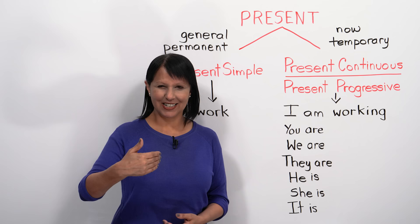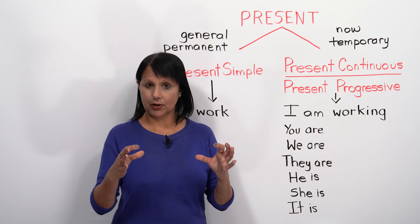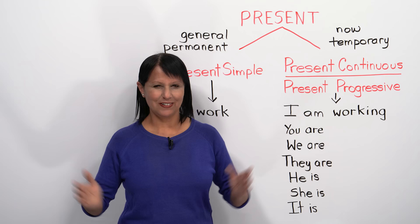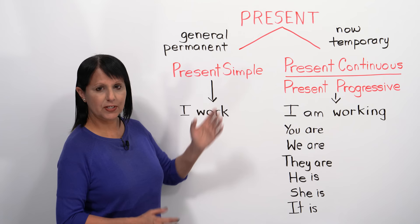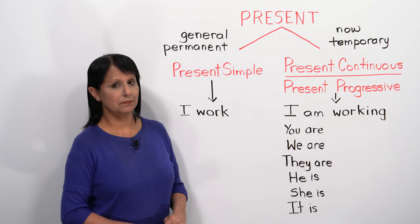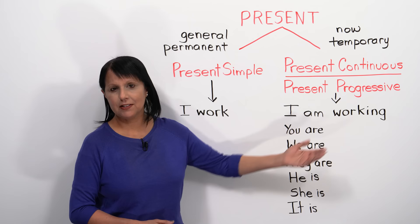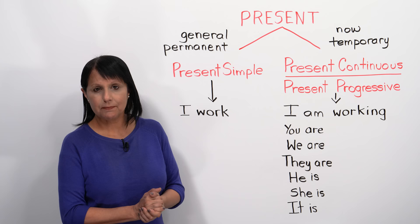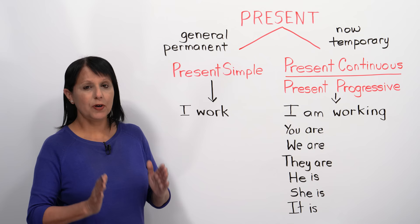It can also talk about something temporary — like you're watching this lesson right now, for a short time. So it could be something happening now or something temporary. However, we use 'I work' in the present simple to talk about things that are true in general — for example, 'I work in this company, but I am working now,' or 'I work in this company, but I'm not working now — I'm having lunch.' We also use present simple to talk about things that are more permanent, like your job, where you work, where you live. Present continuous is more temporary and now.